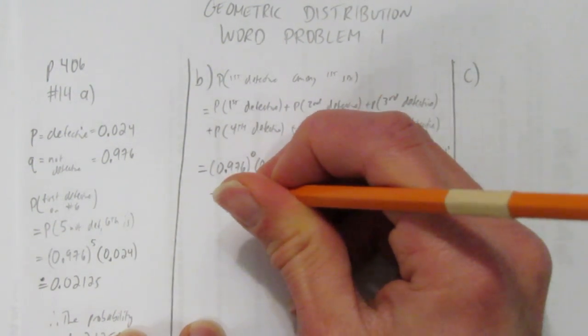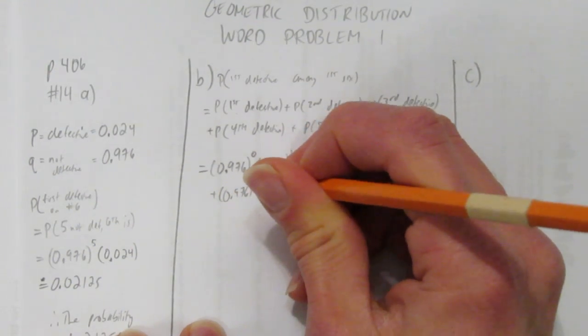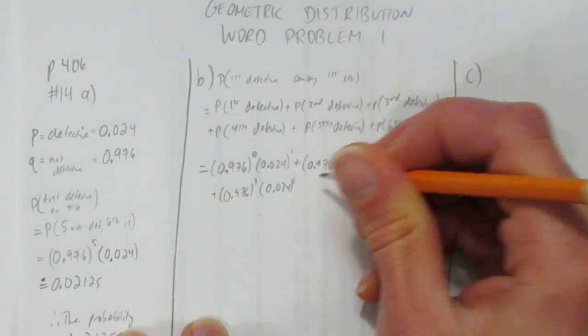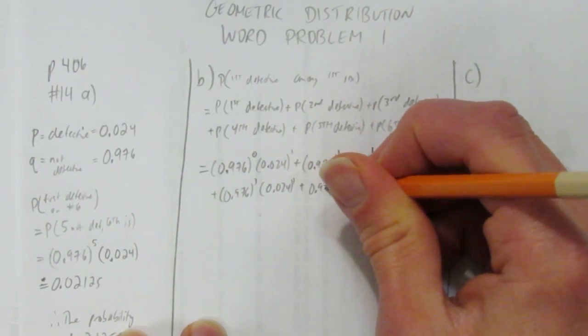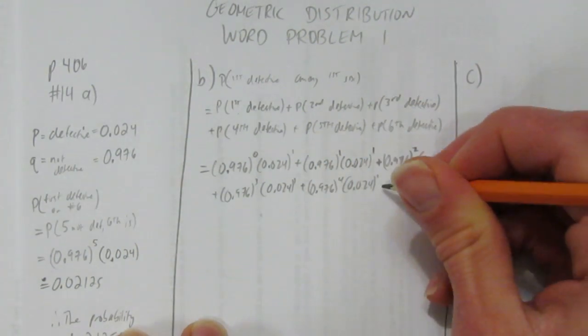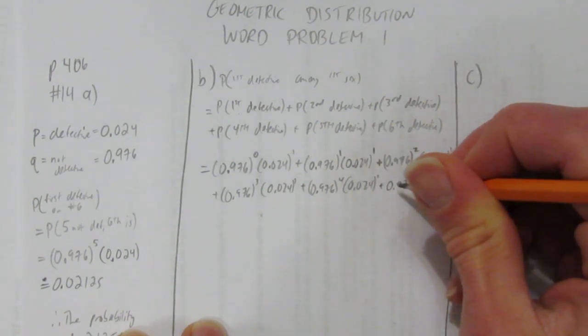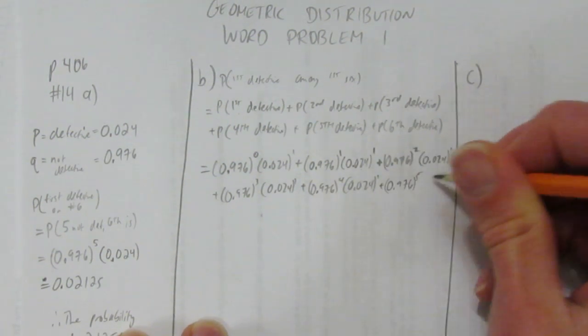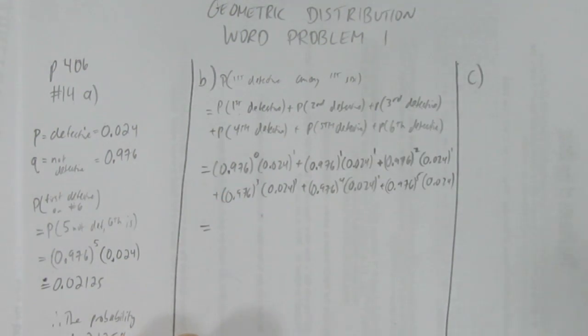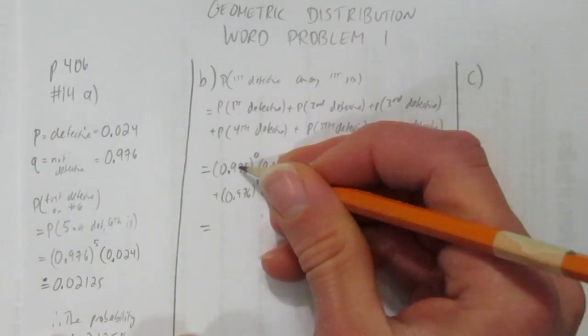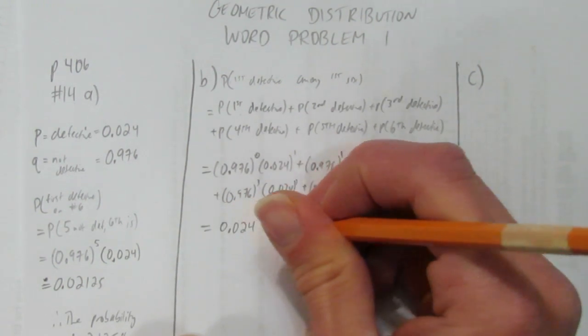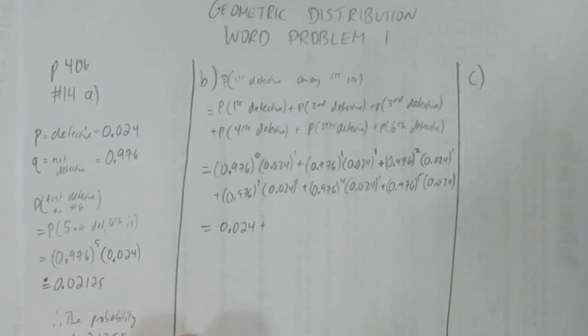Plus, the fourth one's the defective one, so you have three successes, 0.976 to the third, then your defective thing. Then the fifth thing's defective, that means you had four successes, then your failure. And finally, you had five successes, and then the sixth one's the defective one. So you have to add all those together. We're going to have some number crunching to do. The first one's easy, anything to the power of zero is just one, so one times this is just 0.024.